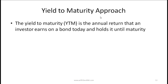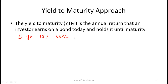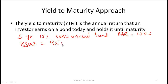The yield to maturity approach: the yield to maturity is the annual return that an investor earns on a bond today, assuming that he holds the bond till maturity. For example, let's say that a company issues a five-year 10% semi-annual bond with a par value equal to 1000 and an issue price equal to 950.